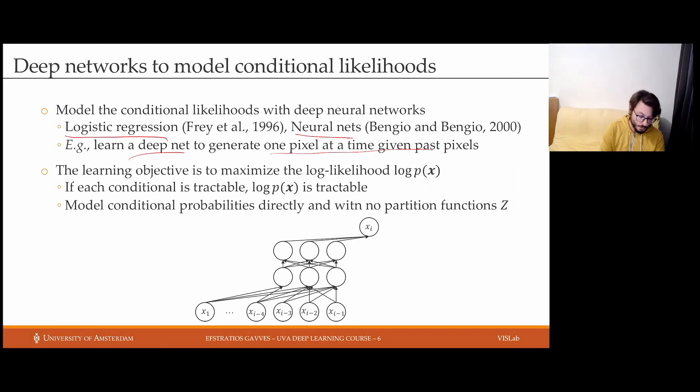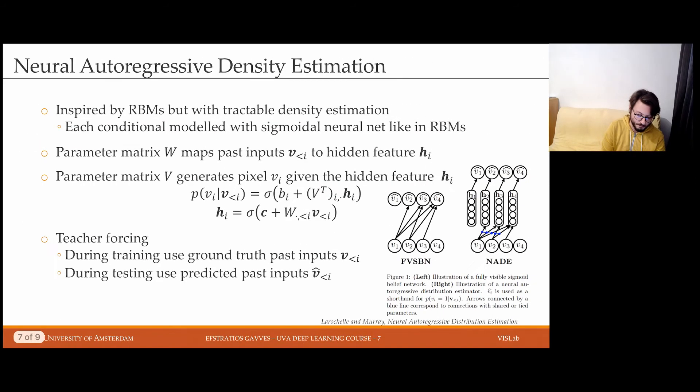And this is good because we can then opt to model conditional probabilities directly, such that they return directly probabilities, thus avoiding having to account for additional partition functions Z. So if the output of a neural network is directly a probability between 0 and 1, for instance, then we don't need to normalize and we don't need to account explicitly for a partition function.